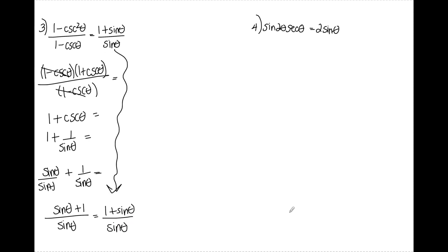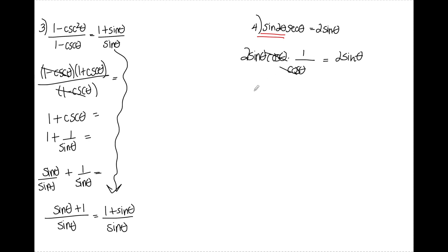Number four: sine of 2 theta times secant theta equals 2 sine theta. The double angle identity gives sine of 2 theta equals 2 sine theta cosine theta, and secant theta equals 1 over cosine theta. The cosine theta cancels, and I'm left with 2 sine theta equals 2 sine theta. That was an easy one.